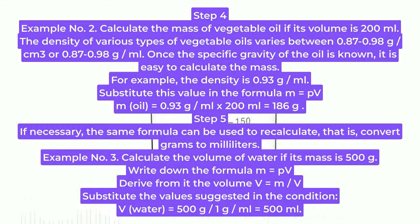Step 4, Example 2: Calculate the mass of vegetable oil if its volume is 200 milliliters. The density of various types of vegetable oils varies between 0.87 to 0.98 g/cm³ or 0.87 to 0.98 g/ml.